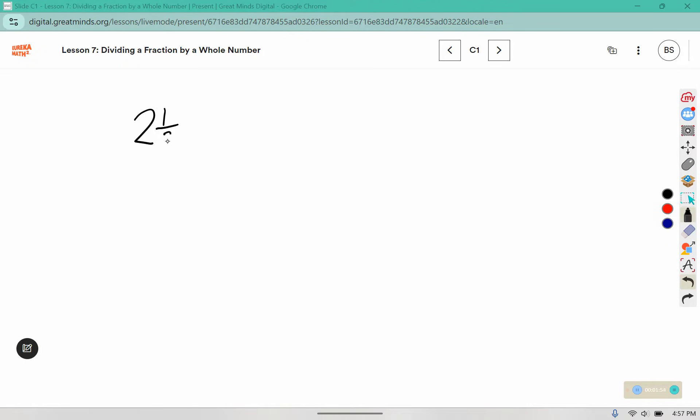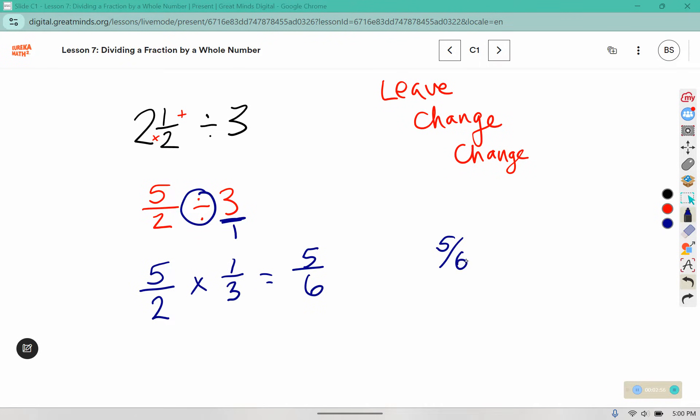Sharing among three people evenly. 2 times 2 makes 4 plus the one on top. This can be rewritten as 5/2. 2 times 2 plus one more makes 5, and we are dividing that by 3. Now we use what's called leave-change-change. We're going to leave the first fraction, change the division to multiplication, and then change the second number to its reciprocal. Remember there's always an invisible one, so we flip it over to 1/3 instead of 3/1. 5 times 1 is 5, 2 times 3 is 6. So each person is going to get 5/6 of a piece of pizza.